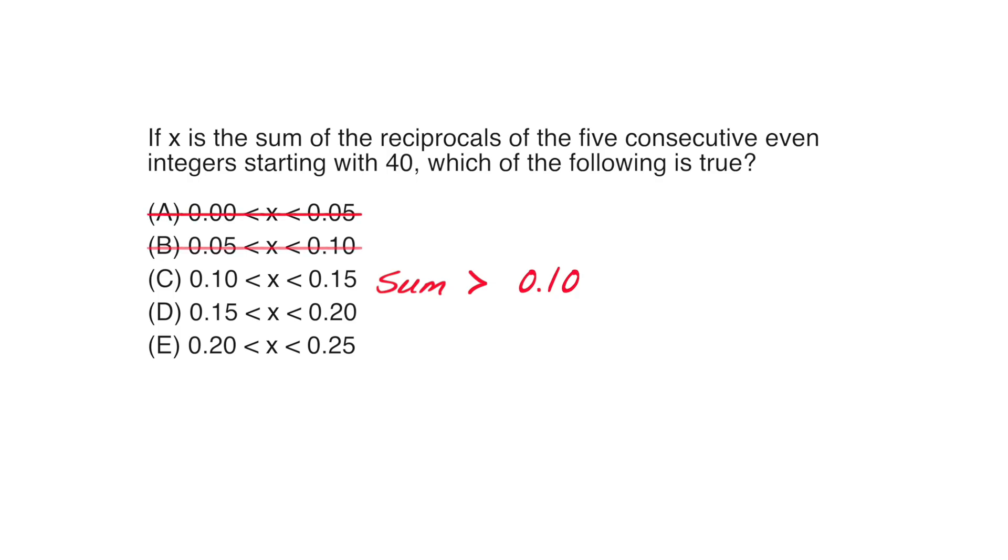Great. We can already eliminate A and B. Now each of the numbers is also less than 1 over 40. So the sum is going to be less than 5 times 1 over 40, or 5 over 40. That reduces to 1 over 8, or 0.125. And now we can eliminate choices D and E, and we've found the correct choice C without breaking much of a sweat.